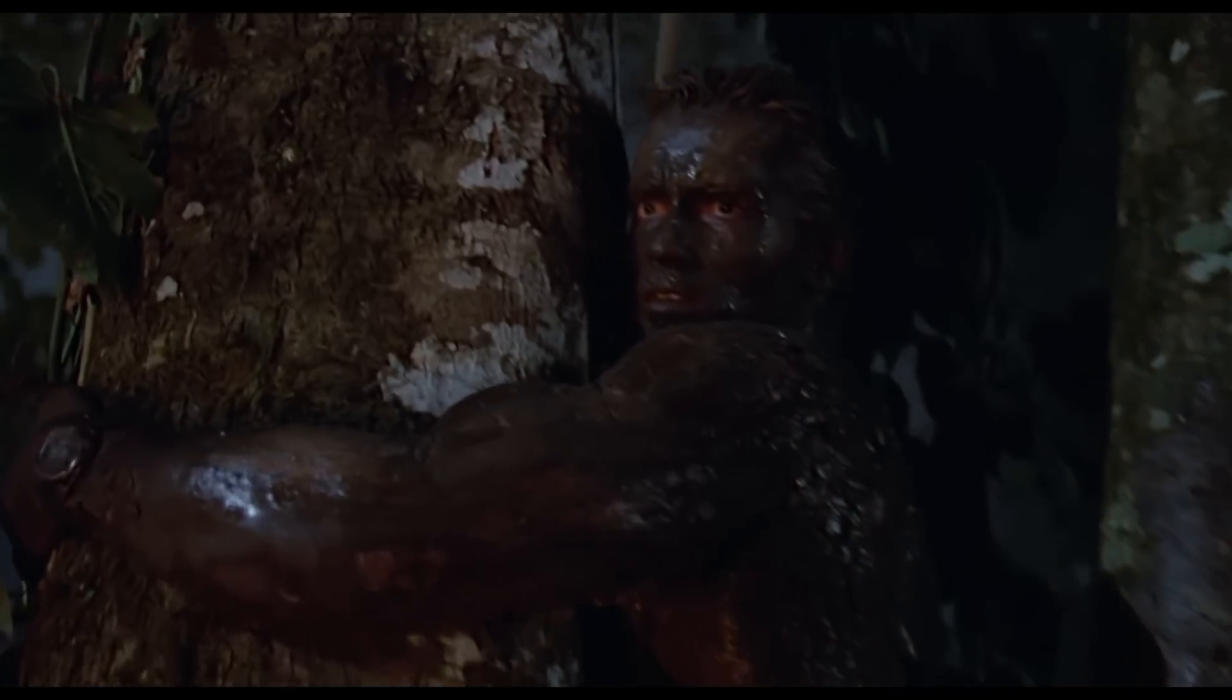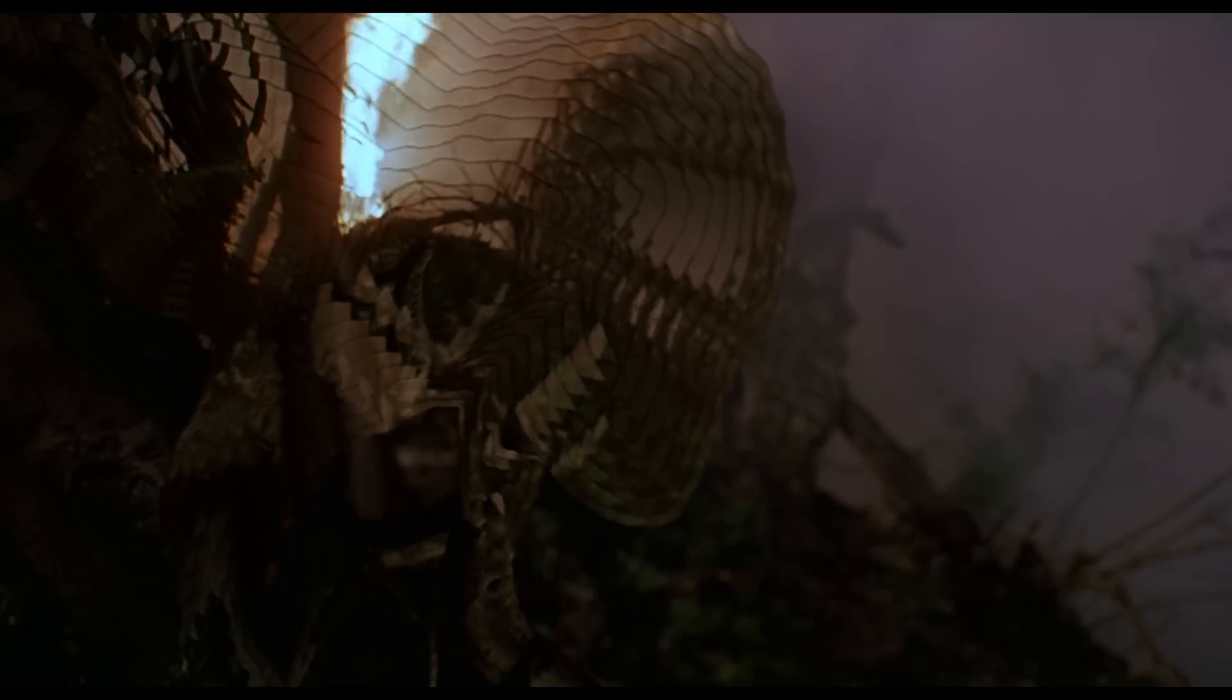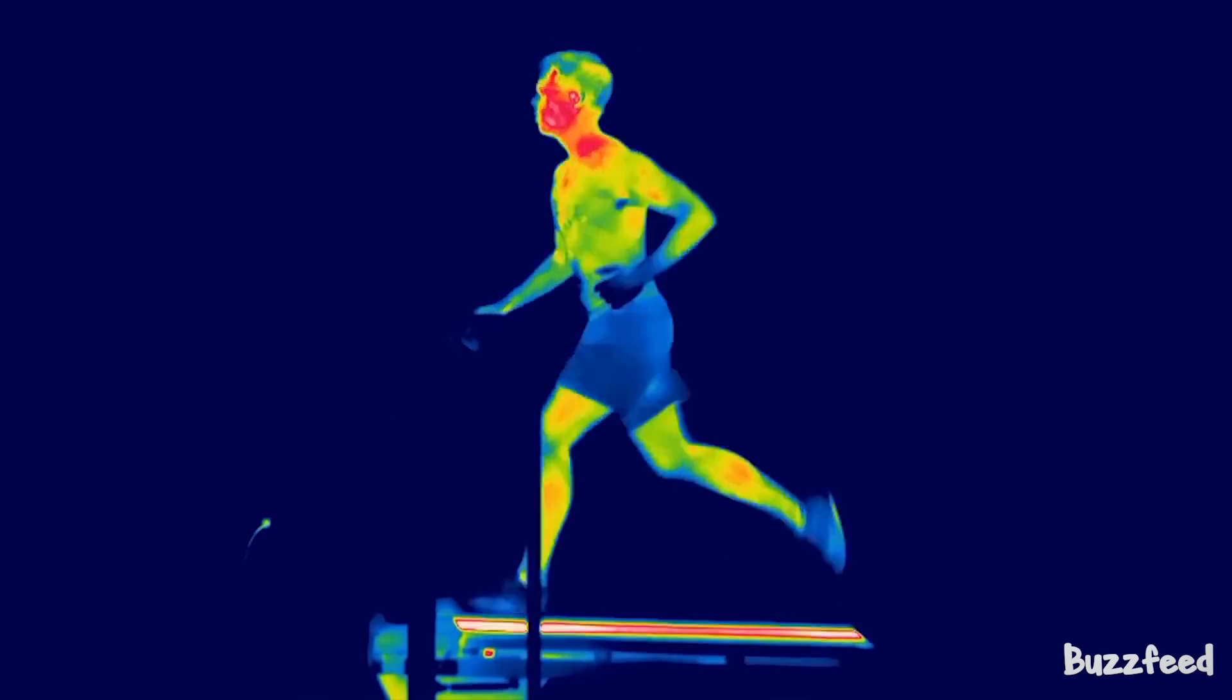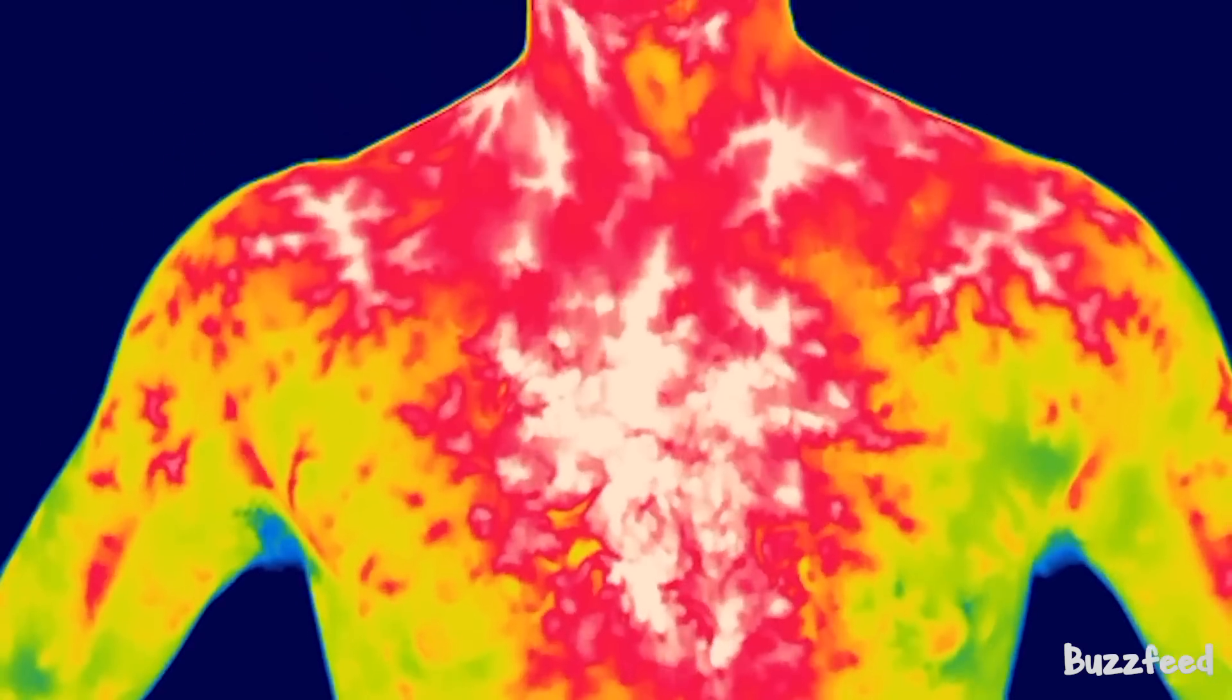You've certainly seen infrared goggles before, and maybe you've seen this scene in Predator, where Arnold covers himself in mud to mask his body heat and the light it gives off. But why is Arnold's body normally glistening in the infrared? What causes this phenomenon?